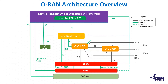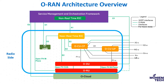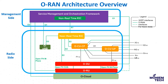In the O-RAN architecture, we can identify two or three domains. The radio side includes the near-real-time RIC, OCU-CP, OCU-UP, ODU, and ORU. The management side, or upper side, is called the management side, and it includes the SMO — Service Management and Orchestration framework — which contains the non-real-time RIC function. There are also some interfaces, some from 3GPP and some that are O-RAN-specific.